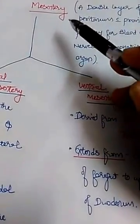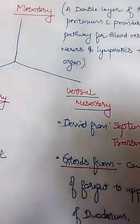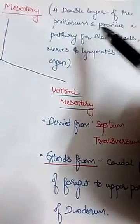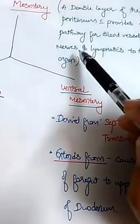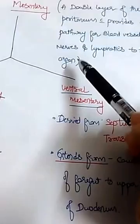What is this mesentery exactly? Mesentery is basically a double layer of peritoneum which provides the pathway for blood vessels, nerves, and lymphatics to the organ.